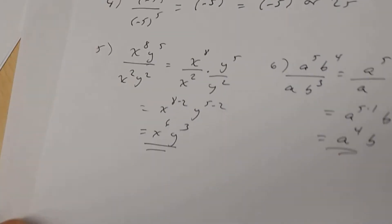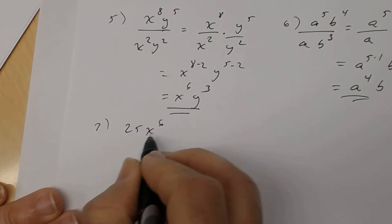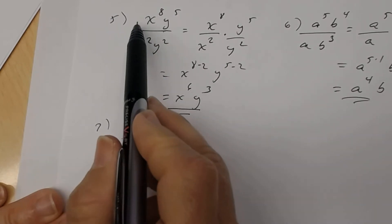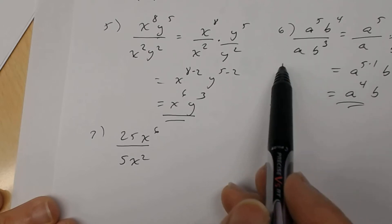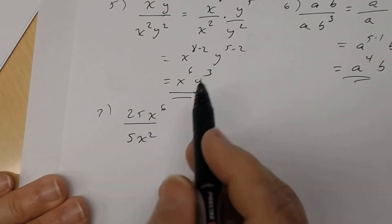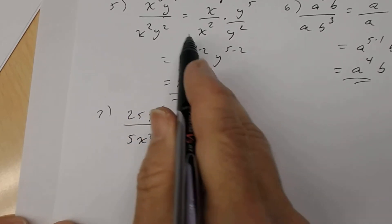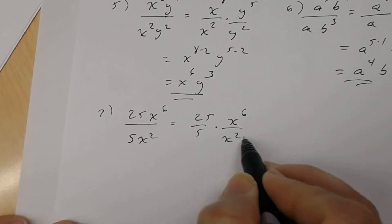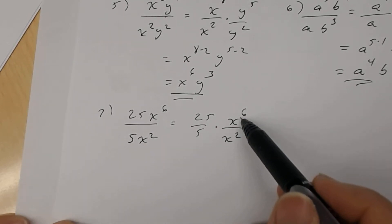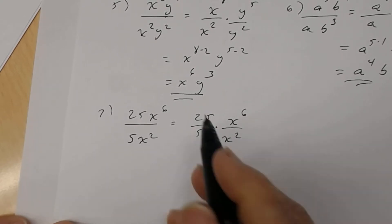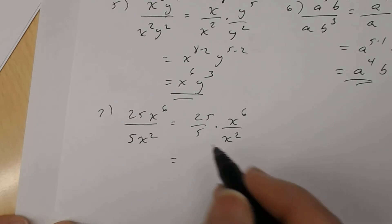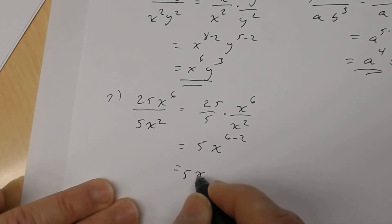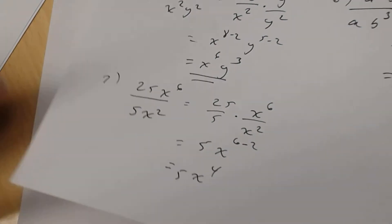Number 7: you have 25x to the 6th divided by 5x squared. Notice here the coefficients are 25 and 5, not 1. So rewrite as separate fractions: 25 divided by 5, times x to the 6th divided by x squared. Only use the quotient rule with the variable part. 25 divided by 5 is just 5, and x to the 6th subtract 2 gives x to the 4th. So the answer is 5x to the 4th power.